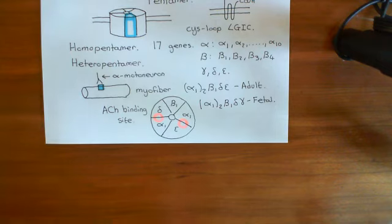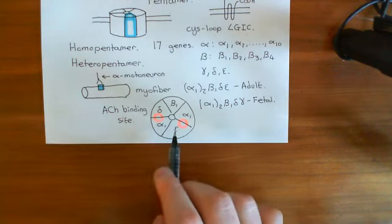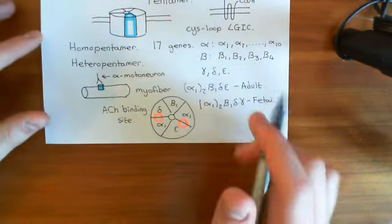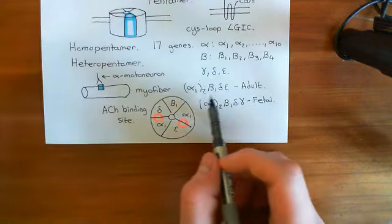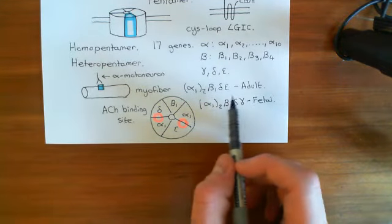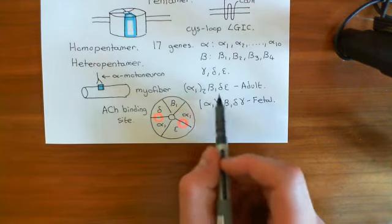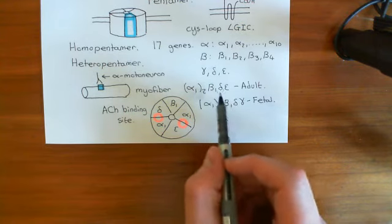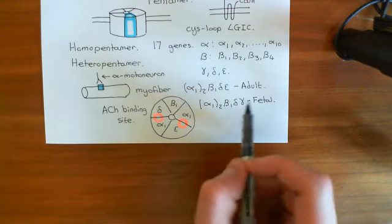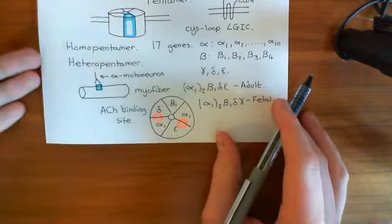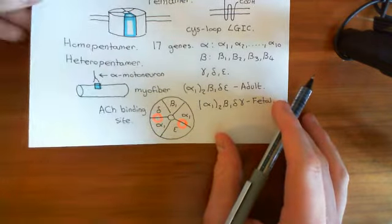That covers the skeletal muscle nicotinic acetylcholine receptors — which is why I said we'd discuss four and a half, because if you count the fetal and adult forms as two separate receptors, you have five, but they are very closely related. Let's now discuss the other three.